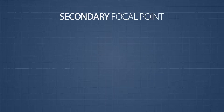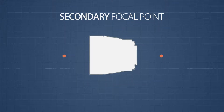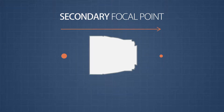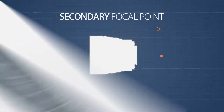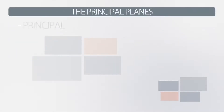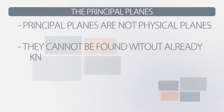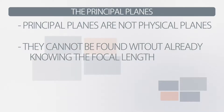From the definition of focal length, I specified the secondary focal point. This is because each lens actually has two focal points, one on either side. However, since in photography the light is always traveling the same direction through the lens, the front, or primary, focal point can be ignored. Next we have the principal planes, which are a little bit more difficult to understand. They're not physical planes, and they can't be precisely found without already knowing the focal length.